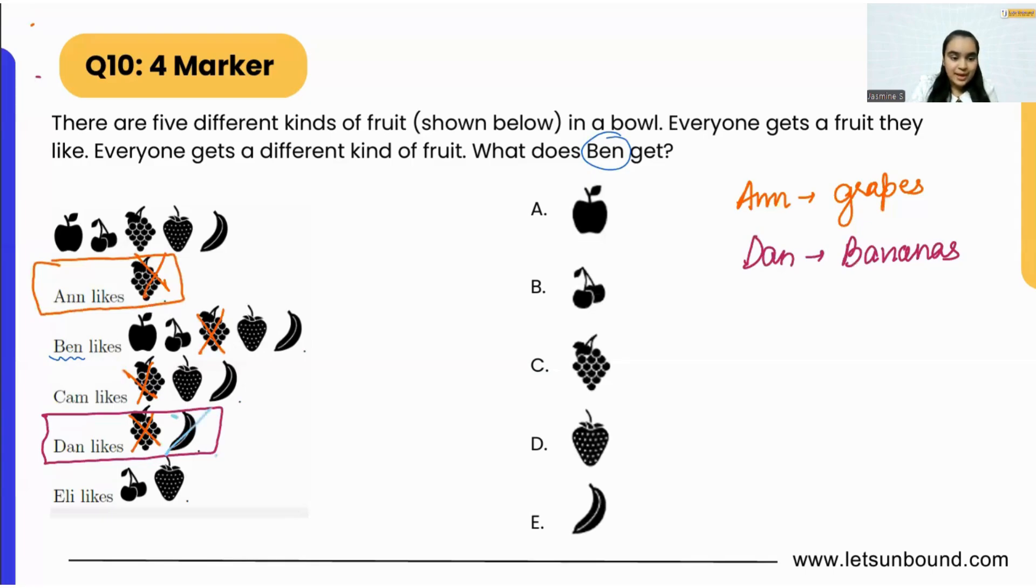Now we will go to Cam. Cam will get strawberries. Why strawberry? Because grape is with Ann and banana is with Dan, that means we are only left with strawberry that will be given to Cam. So now we can remove strawberries from everywhere.